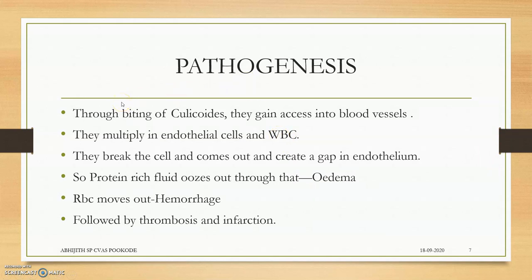Pathogenesis: through the biting of Culicoides, the virus gains access into the blood and subcutaneous tissue, then into blood vessels. They multiply in endothelial cells and white blood cells. When an endothelial cell breaks, there is a gap in the vessel. Protein-rich fluid from the blood oozes out through the gap, leading to edema. RBCs also ooze out, leading to hemorrhage.